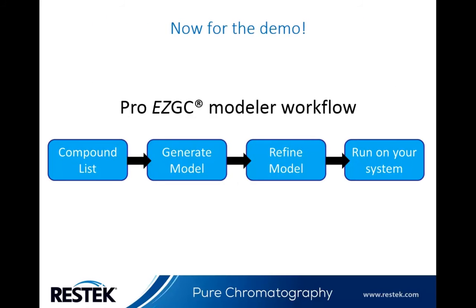So now for the demo. This is going to be just a very quick demonstration of the power of the ProEasy GC modeler. In video two, we'll actually go more in depth on the basic use of the modeler. The workflow of the modeler pretty much mirrors the workflow in the development of a chromatographic method. We start with a compound list, then generate our model — basically like doing our initial runs. We refine our model, which is optimizing our runs. And then once we have a model that we like, we can purchase any columns or standards that are needed and run it on our system.